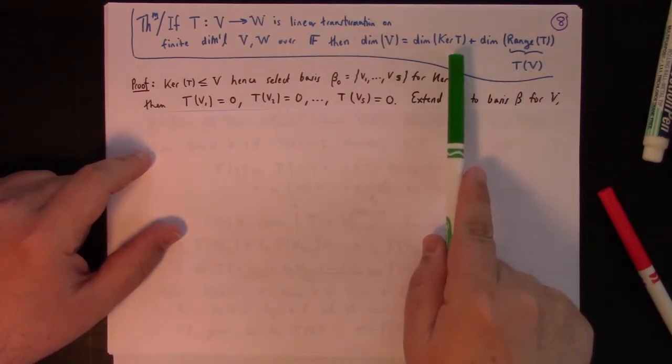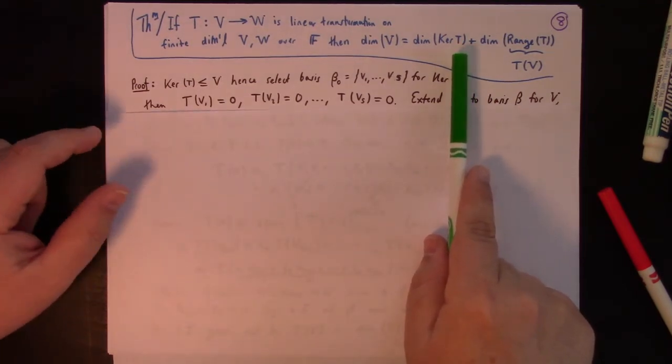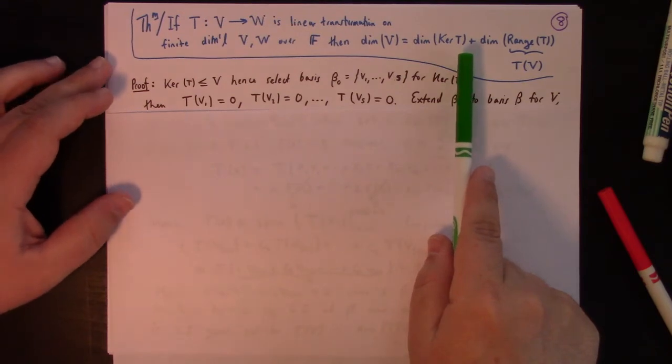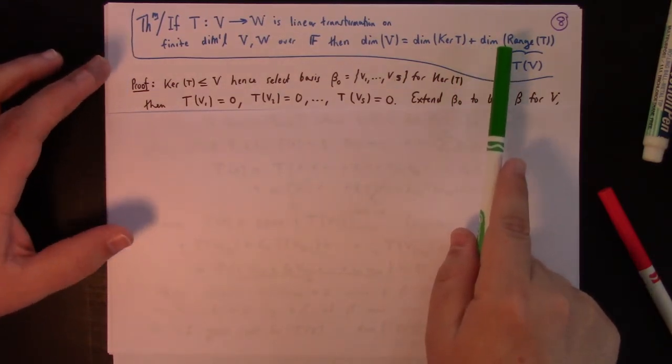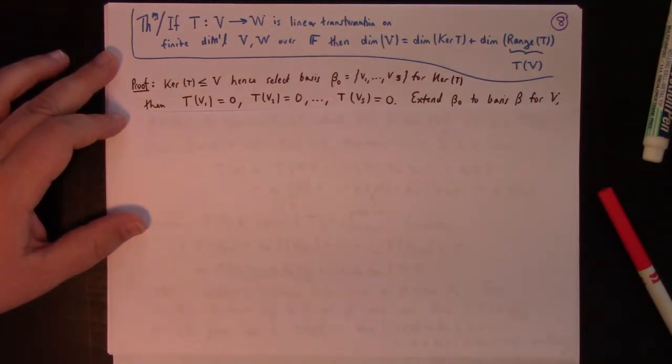Now, one way we could prove that would be just to use the coordinate mapping stuff and to steal the result from the thing I've told you guys about column vectors and pivots and non-pivots, but I'm going to show you a different argument right now, which is more linear algebraic in nature, okay?